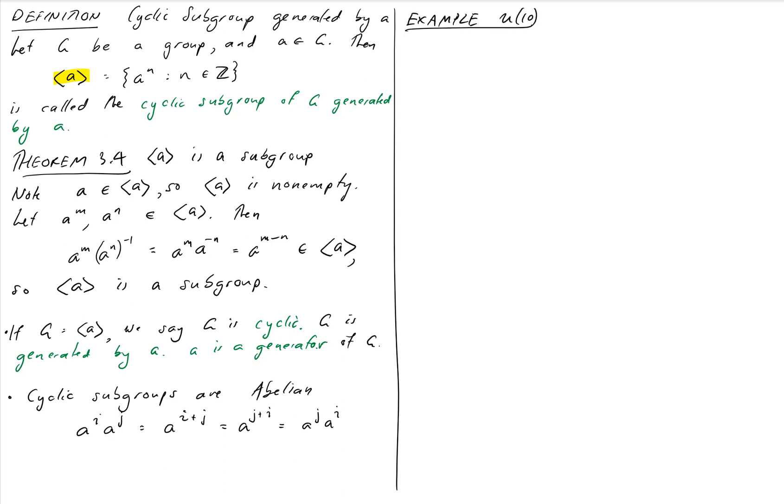Just to practice building these things we're going to take a group that we understand. We're going to look at U of 10. U of 10 is all the numbers relatively prime to 10 and the group operation is multiplication mod 10. Those are the four numbers in question. We're going to build the cyclic subgroup generated by each of these elements.